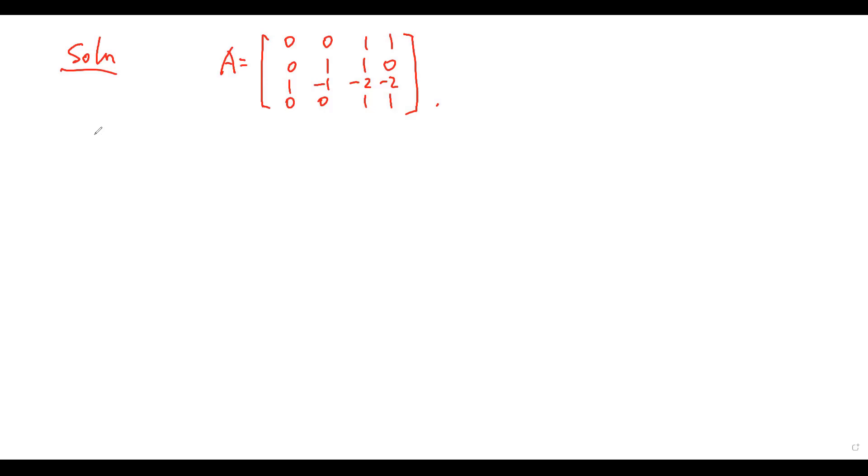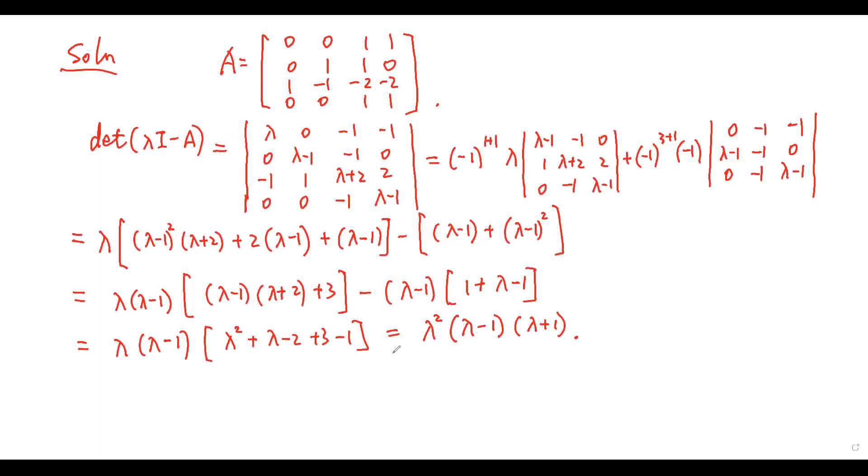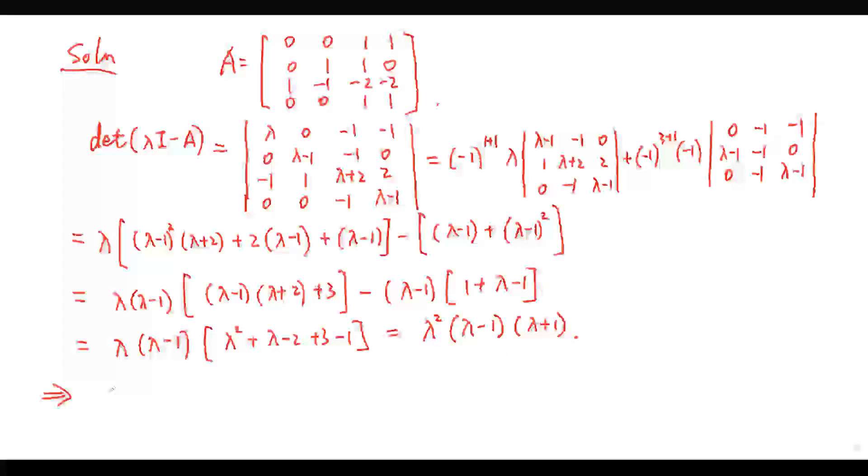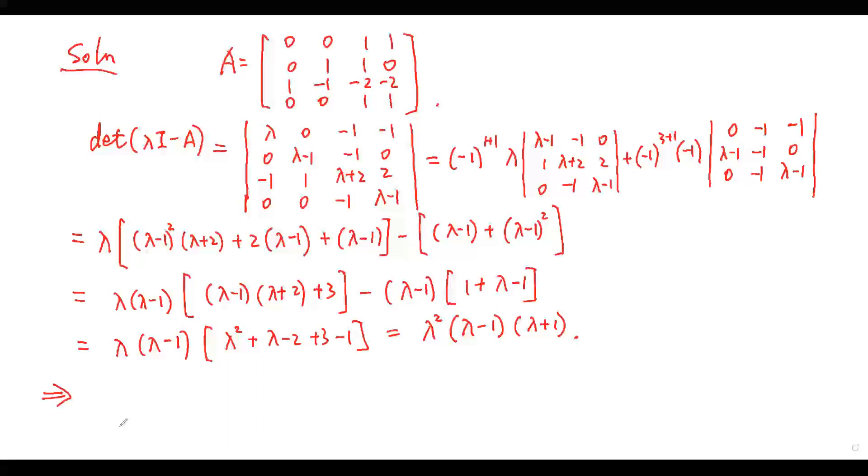The characteristic polynomial of A is given by the determinant. This determinant equals this one. From this, we can get the eigenvalues of the matrix A.